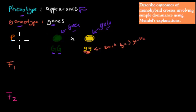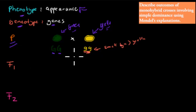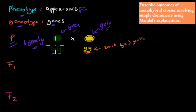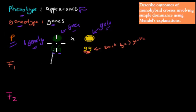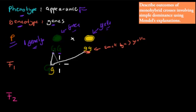Now we're going to cross two of the P generation plants - one green with one yellow - and see what comes out. The rule of segregation means that only one gene from each parent passes on to the new plant, not both genes from both parents. So for example, we grab one big G from the green plant and one small g from the yellow plant, producing a big G, small g offspring.